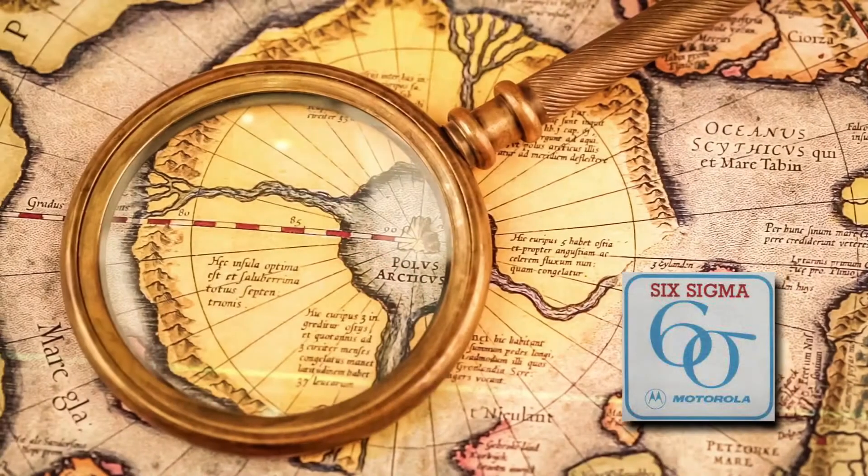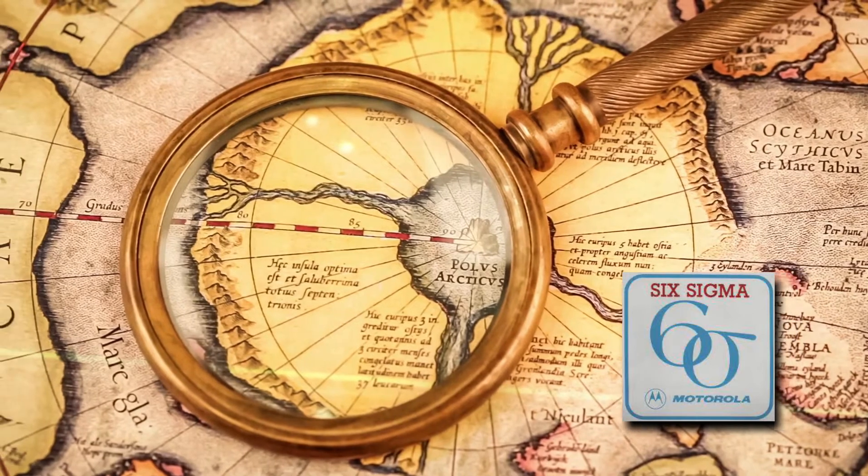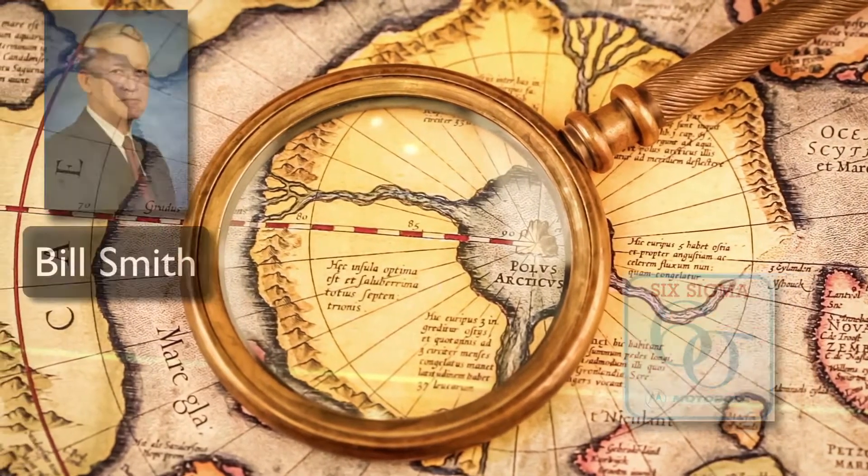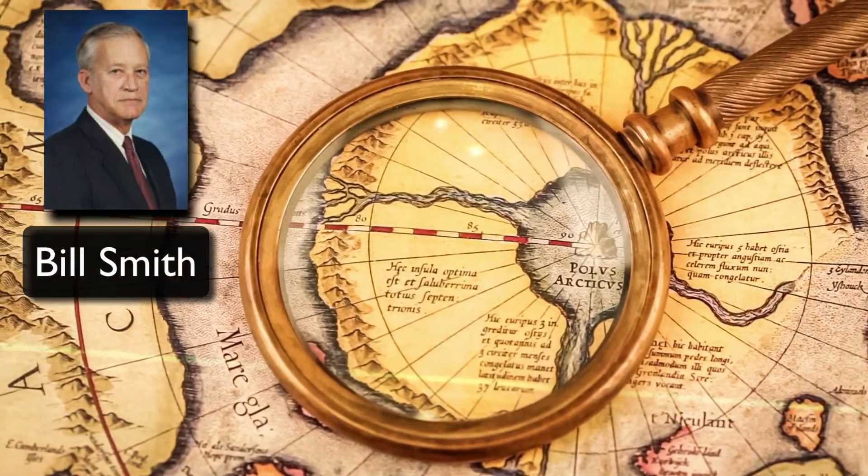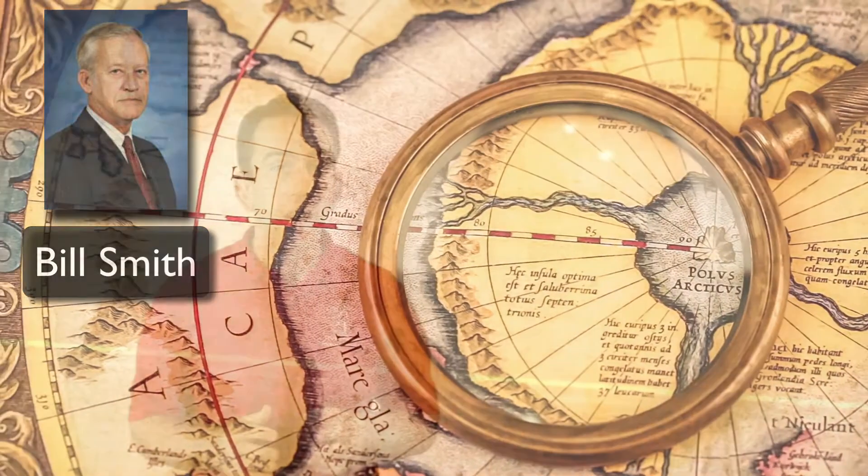Let's begin by looking at the roots of Six Sigma history. Our story begins in 1986 at a company by the name of Motorola. A young engineer by the name of Bill Smith was experimenting with a different method in an effort to improve business processes.